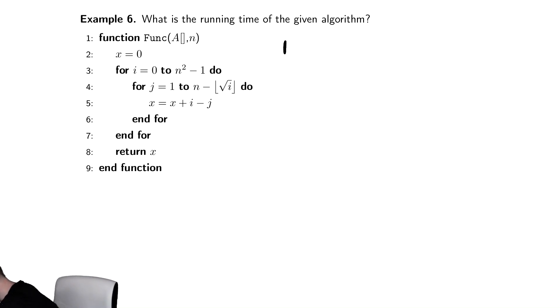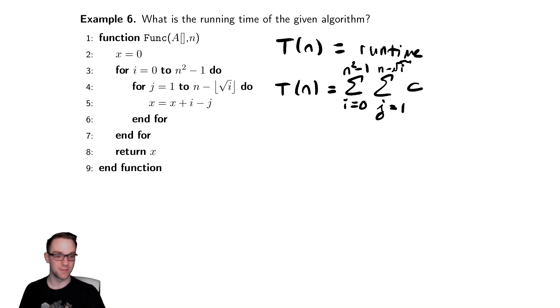This is T(n) as the runtime. Just as we've seen in the past, we can write it as two summations. That's T(n) equals the sum from i equals 0 to n squared minus 1, and then the j for loop written as j equals 1 to n minus radical i of c, because again, this thing inside is basic arithmetic assignment, all of those things.